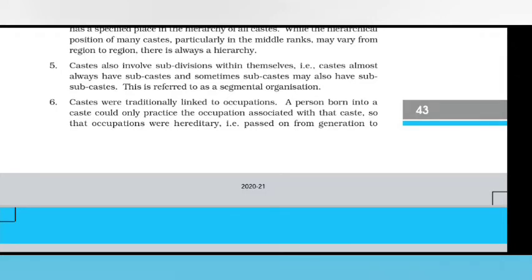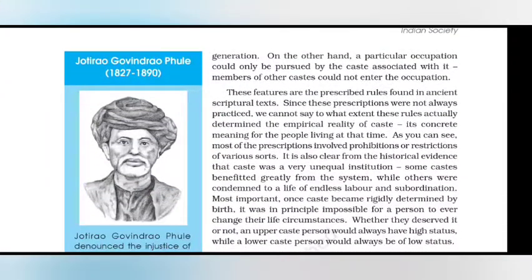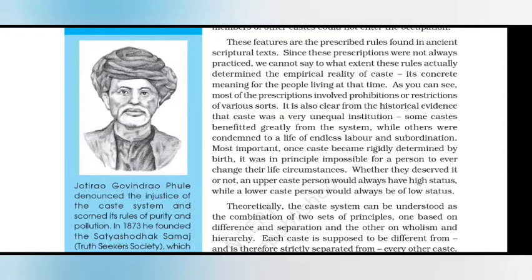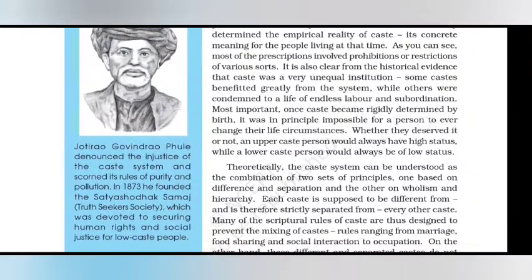Castes were originally and traditionally linked to occupations. A person born into a caste could only practice the occupation associated with that caste, so occupations were hereditary — passed on from generation to generation. Conversely, a particular occupation could only be pursued by the caste associated with it; members of other castes were not to enter that occupation. These features are prescribed rules found in ancient scriptural texts, and since these prescriptions were not always practiced, we cannot say to what extent they actually determined the empirical reality of caste.